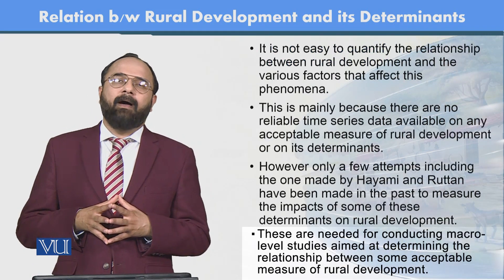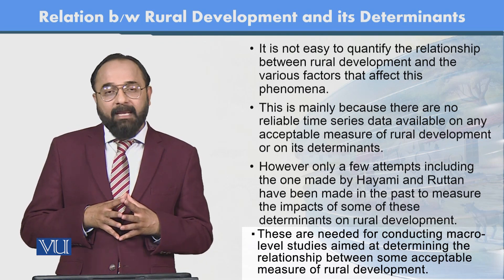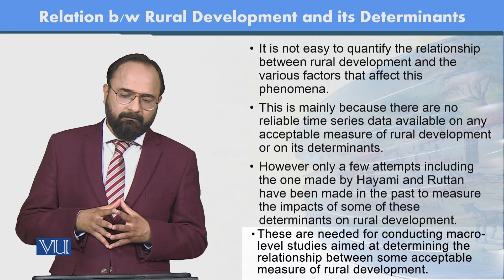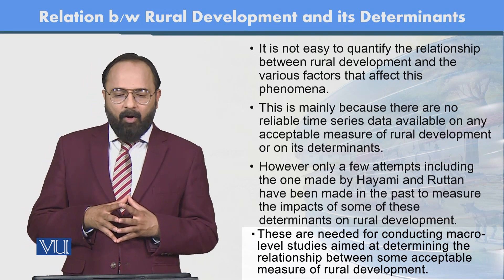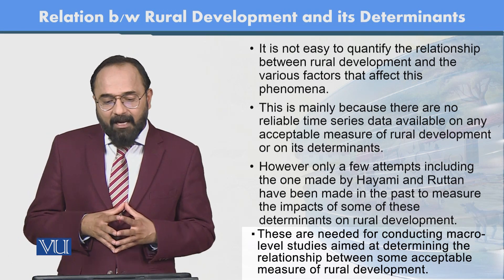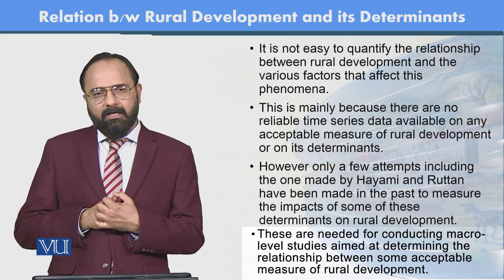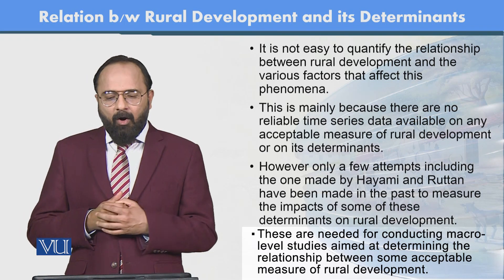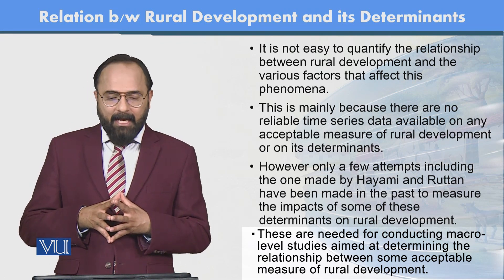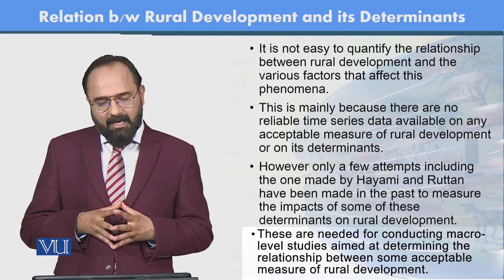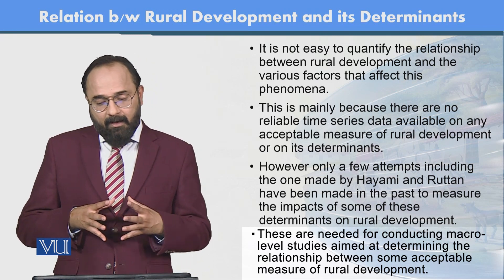It is not easy to quantify the relationship between rural development and the various factors that affect this phenomenon. This is mainly because there are no reliable time series data available on any acceptable measure of rural development or its determinants — کیونکہ یہ determinants area to area، culture to culture، society to society vary کرتے ہیں۔ However, only a few attempts — including the one made by Hemi and Rutan — have been made to measure the impact of some determinants on rural development.